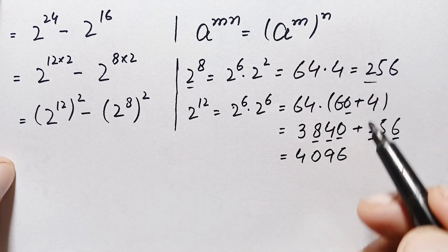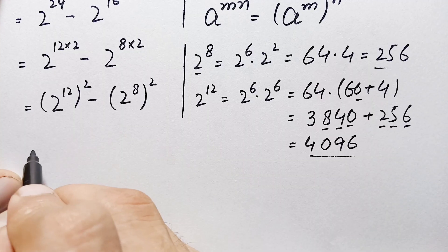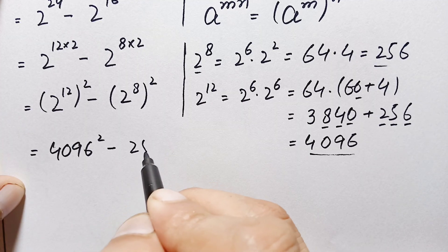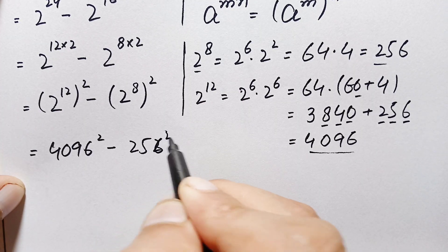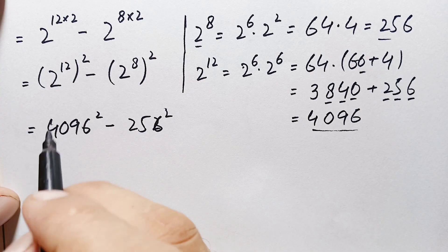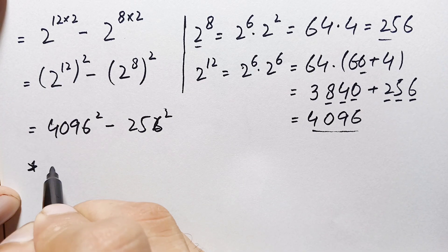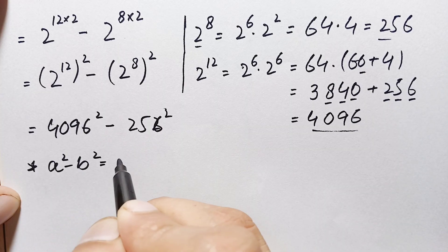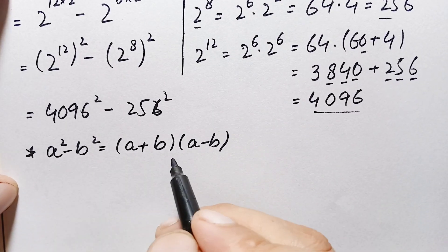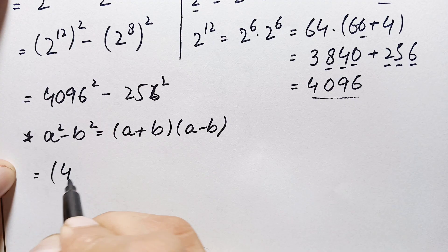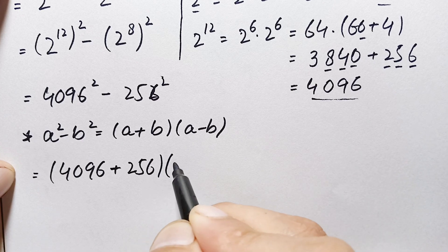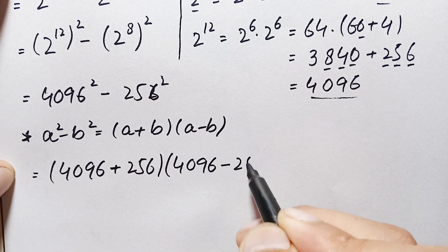Now we replace these two values: 2^24 = 4096^2 and 2^8 wait — we have (2^12)^2 = 4096^2 minus (2^8)^2 = 256^2. This matches the algebraic identity a^2 - b^2 = (a+b)(a-b). Applying it: (4096 + 256) × (4096 - 256).